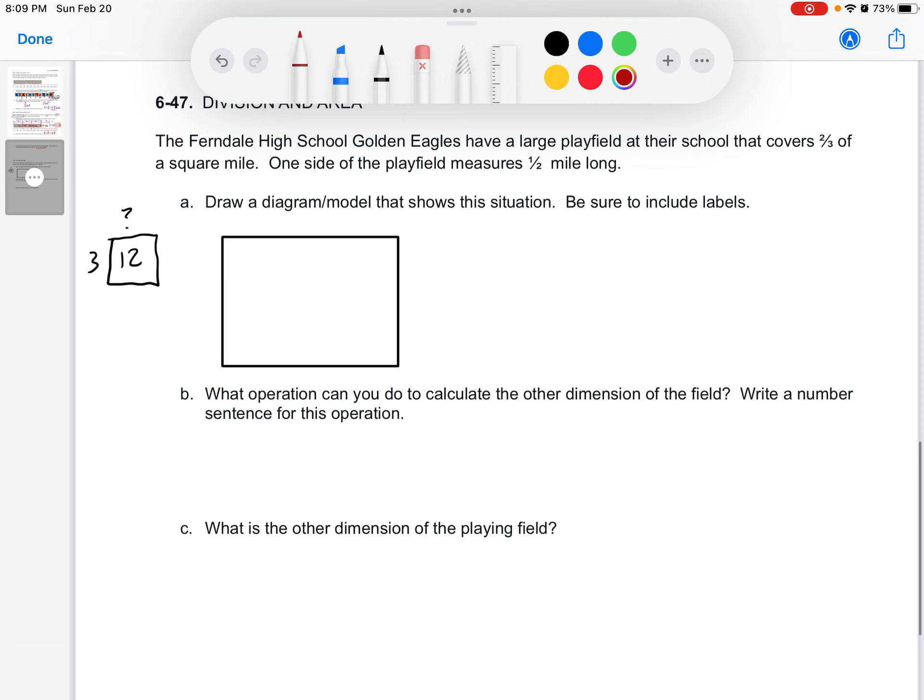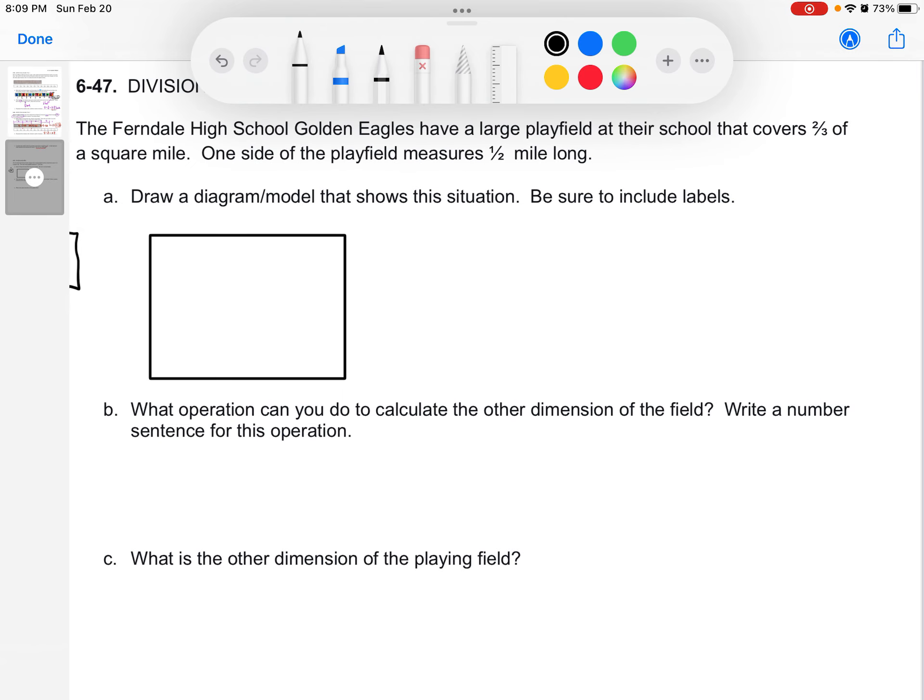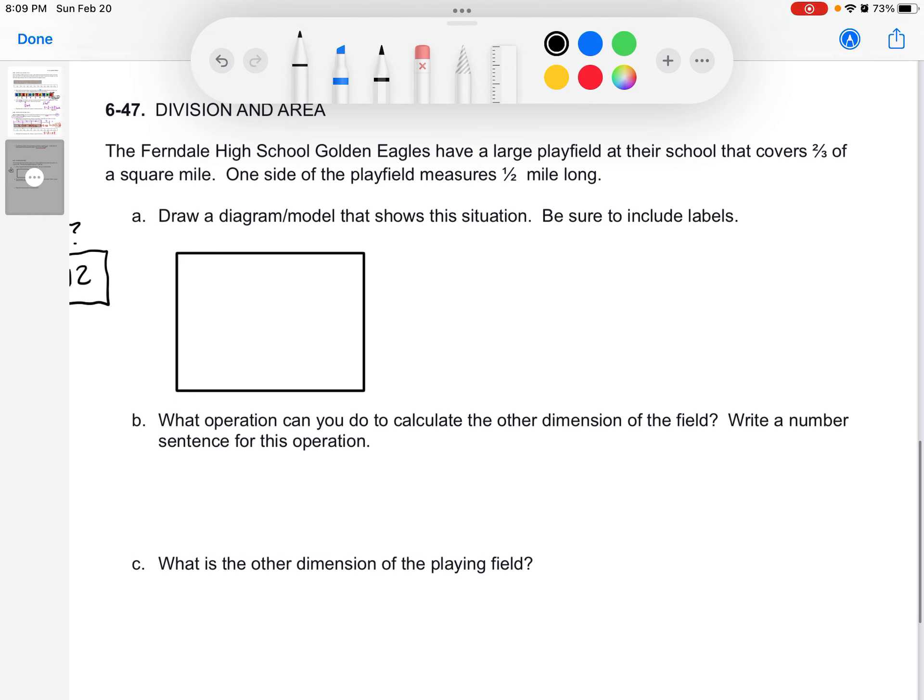All right, last question for the day. The Ferndale High School Golden Eagles have a large play field at their school that covers two-thirds of a square mile. One side of the play field measures a half mile long. Draw a diagram or model that shows this situation. All right, let's do that. So, we found out that it covers two-thirds of a square mile. All right, so the area is two-thirds of a square mile. One side of the playing field measures one-half of a mile long. All right, done.